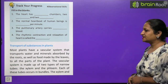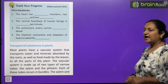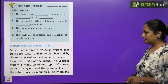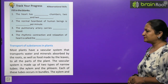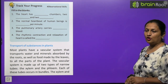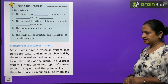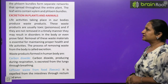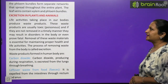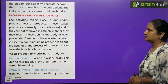Most plants have a vascular system that transports water and minerals absorbed by the roots, as well as food made by the leaves, to all parts of the plant. The vascular system is made up of two types of narrow tubes: xylem and phloem. These tubes occur in bundles. The xylem and phloem bundles form separate networks that spread through the entire plant, and the leaf veins contain both xylem and phloem bundles.